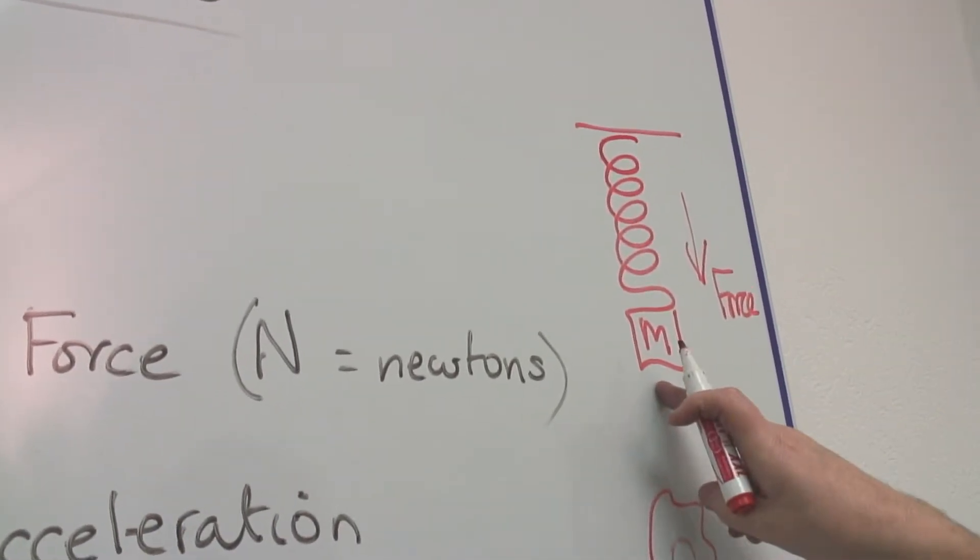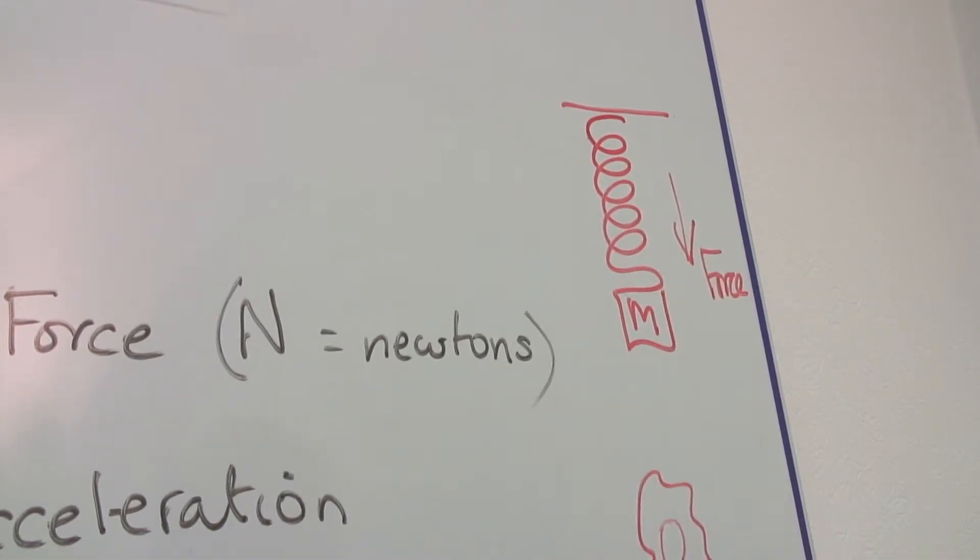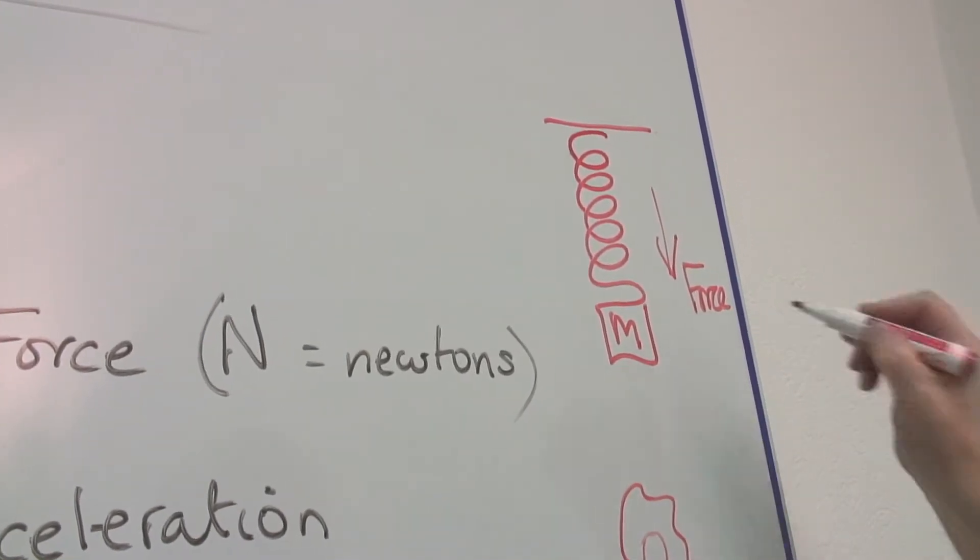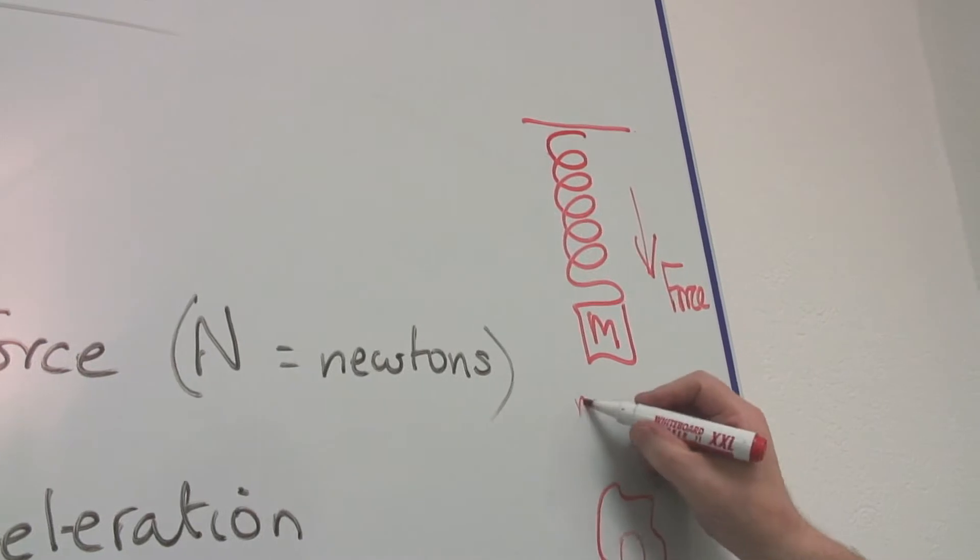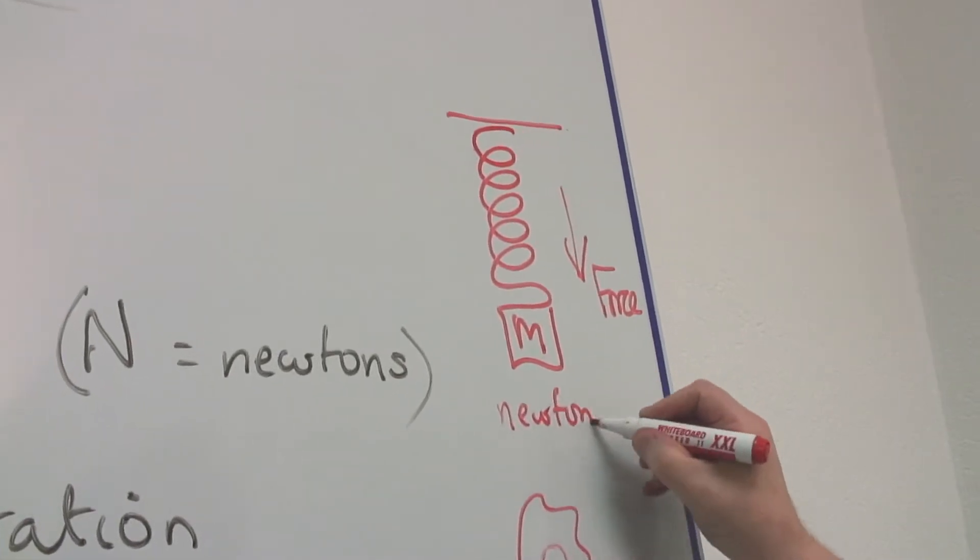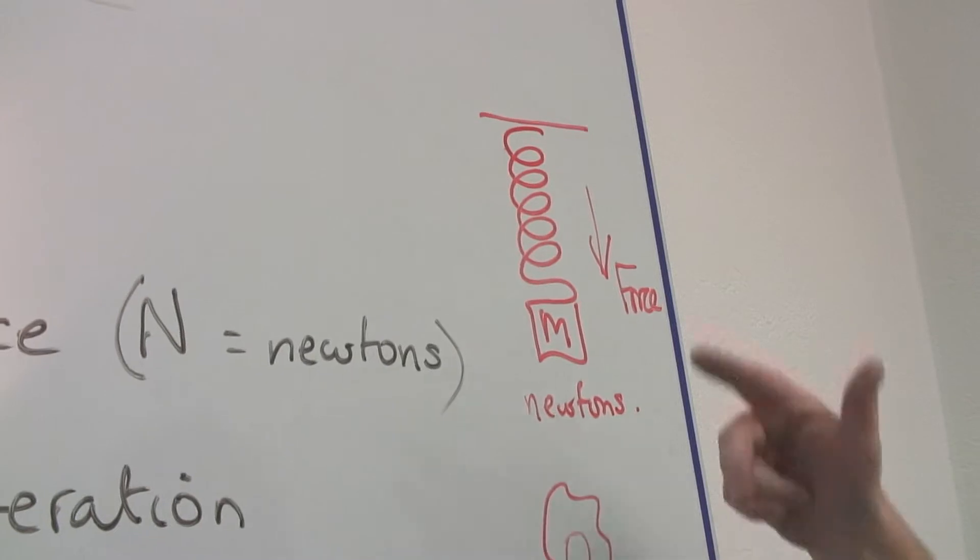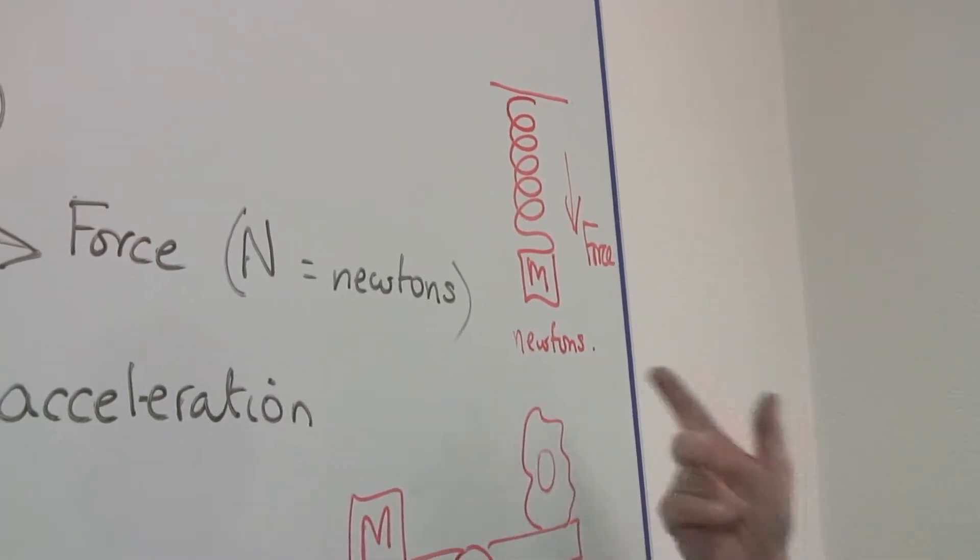A spring scale measures force, not mass. So our mass might be on the end of it, but it's actually measuring the force and this is measured in newtons. So be very careful to distinguish between the two, force and mass.